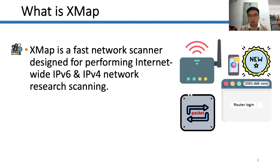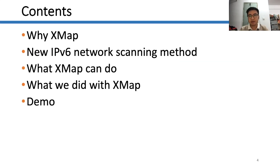What is XMap? XMap is a fast network scanner designed for performing internet-wide IPv6 and IPv4 network research scanning. In the following, I will describe why we developed XMap and our new IPv6 network scanning method, as well as what XMap can do and what we did with XMap. In the end, I will show a small demo.